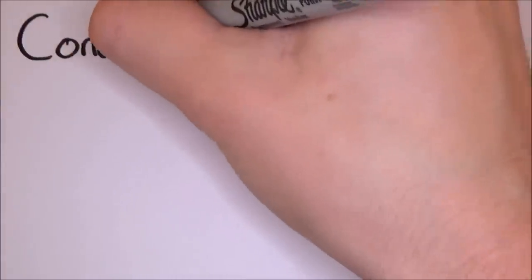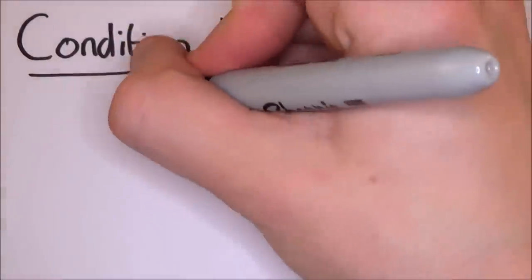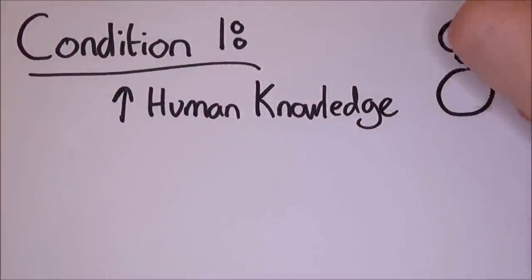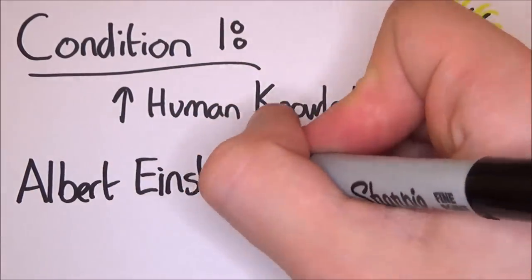If you want to win, there are sort of four conditions to winning. Condition number one is you must be seeking to advance human knowledge or create a solution to a world problem. People who create major shifts in thinking for a field are more likely to receive a Nobel Prize for their work.